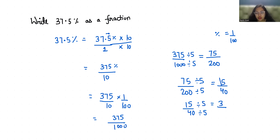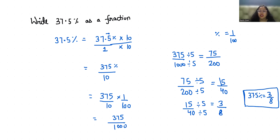So 37.5% in terms of fraction is 3 by 8. I hope it's clear and you find it useful. Please give us a thumbs up and do subscribe to my channel. Stay tuned for more upcoming videos.